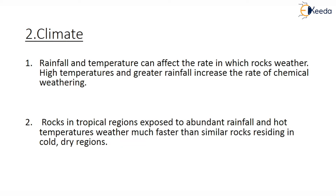The next factor is climate — specifically rainfall and temperature — which affects the rate at which rocks weather. High temperatures and greater rainfall increase the rate of chemical weathering. Rocks present in tropical regions, which are exposed to abundant rainfall and hotter temperatures, weather much faster than similar rocks residing in cold or dry regions. Hence, temperature and rainfall play a vital role in the process of weathering.